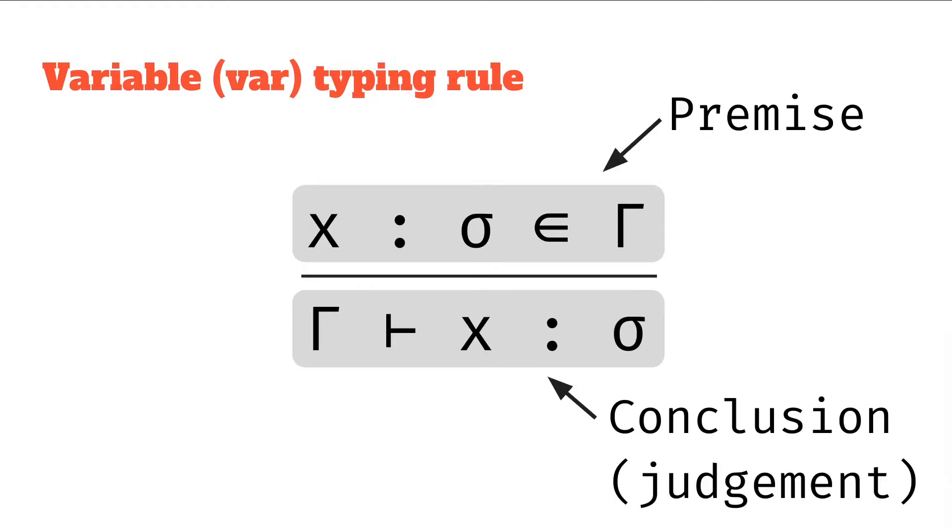The way this works is we say if the premise is true, then the conclusion will be true. It's kind of like an if statement or an implication. So if the top thing is true, the bottom thing will be true as well.